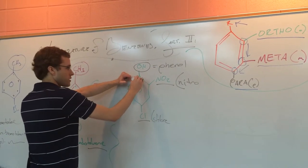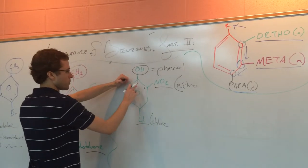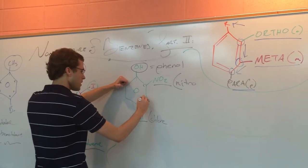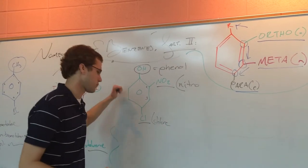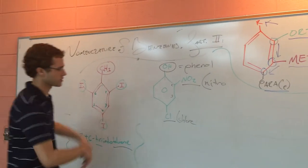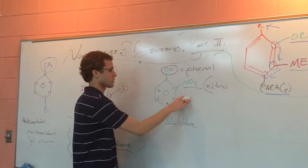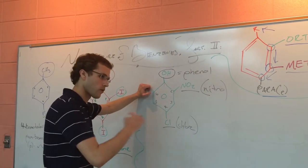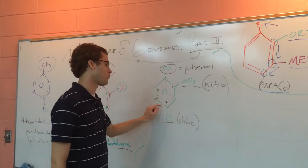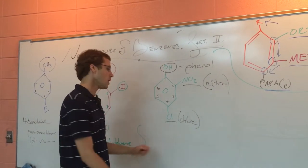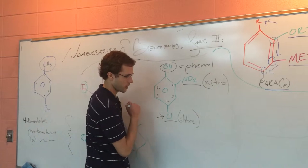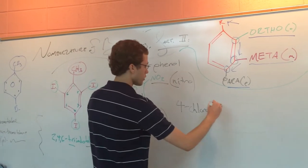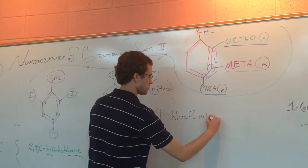So we need to number this: the OH is going to be number one, and then this is going to be number two because we want to give priority to the closest group. The next group would be four if we numbered the other way, so that's not okay — we're going to number clockwise. We have two options: 2-nitro-4-chlorophenol, or 4-chloro-2-nitrophenol. We're going to go with the latter because C comes before N alphabetically, so the name is 4-chloro-2-nitrophenol.